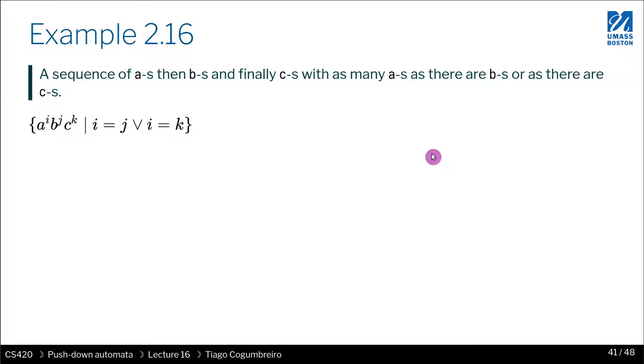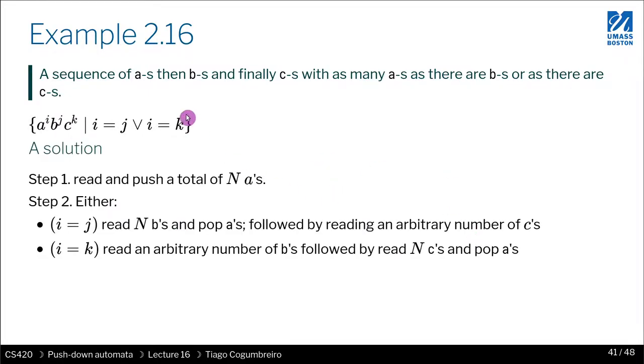So hit pause and I'm going to show you my solution now. It has to have either - because it's the number of a's, right? The number of a's is always either the same as the number of b's, or a's is as many a's as c's.